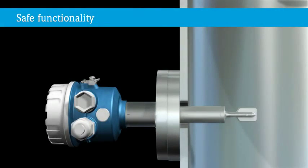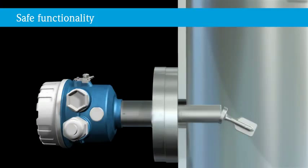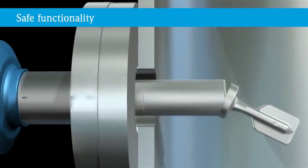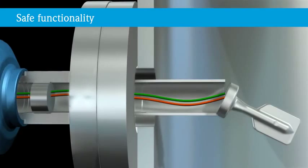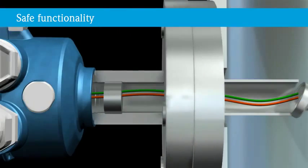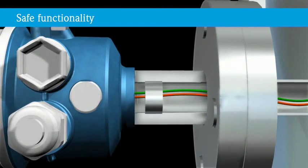If mechanical damage occurs on the process side, the second line of defense takes over. A pressure, gas or diffusion-tight feed-through reliably prevents the medium from escaping into the atmosphere in case of a failure.